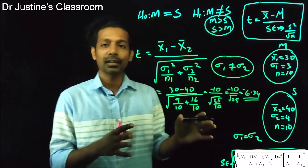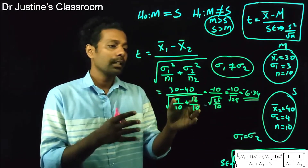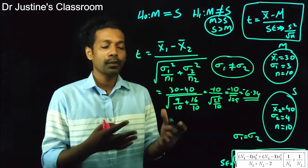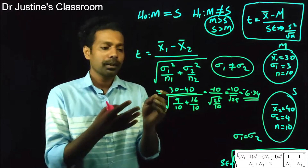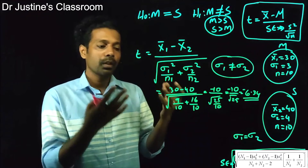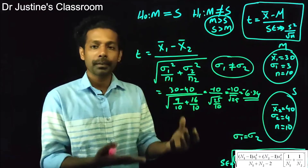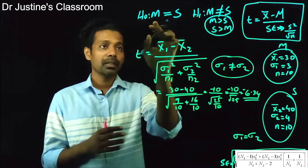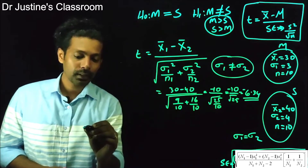So what does this t-value tell us? It tells us what is the chance for a difference of 10 (between 30 and 40) to occur if both groups were drawn from the same population — that is, when the null hypothesis is true.